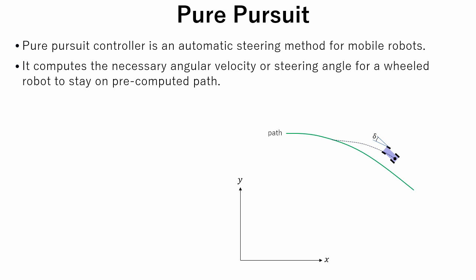In the image on the right, the green line is the pre-computed path. The dotted line is an assumed path which the robot will follow if it steers front wheels with a steering angle of delta. Here we assume that the dotted line is an arc.